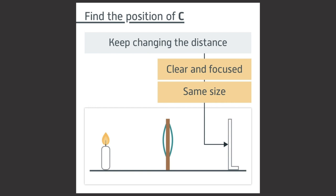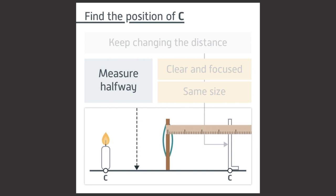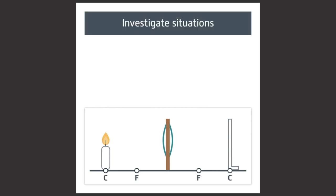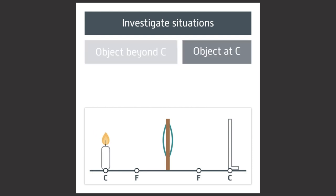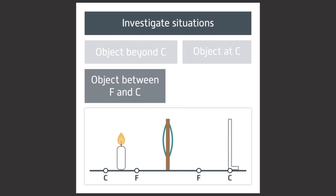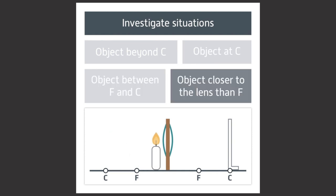Mark the position of C on both sides of the lens. Measure halfway between C and the lens on both sides and mark the position F. You can then investigate the positions of the object and image in these situations: object beyond C, object at C, object between F and C, and object closer to the lens than F.